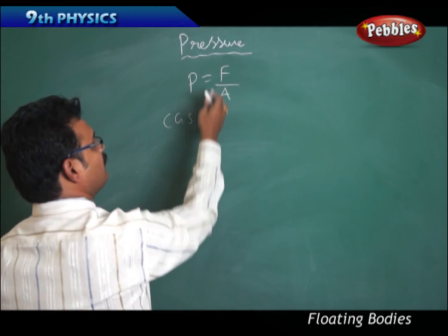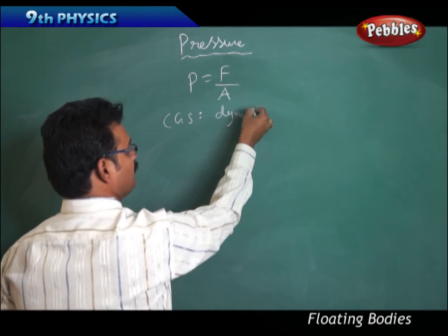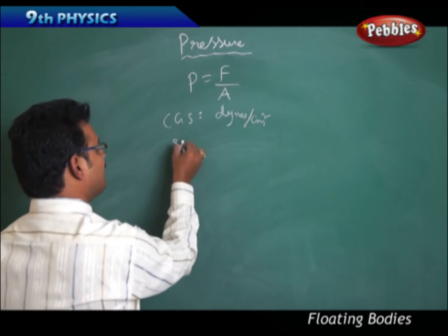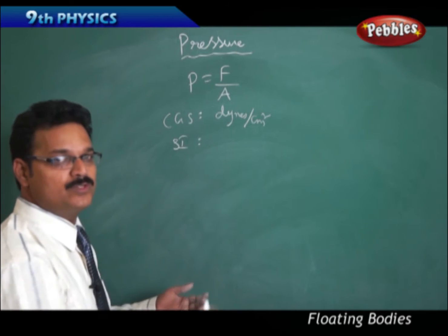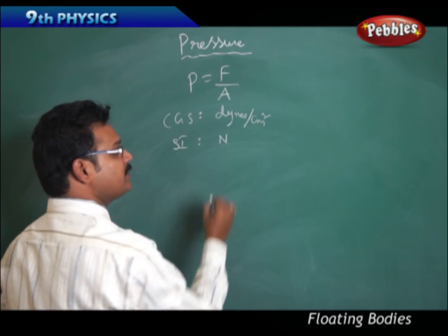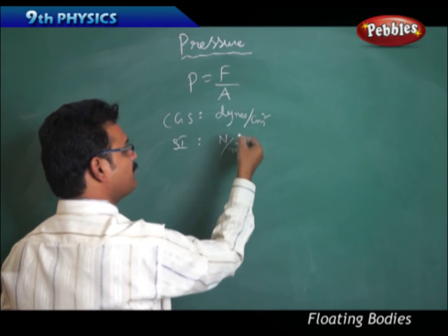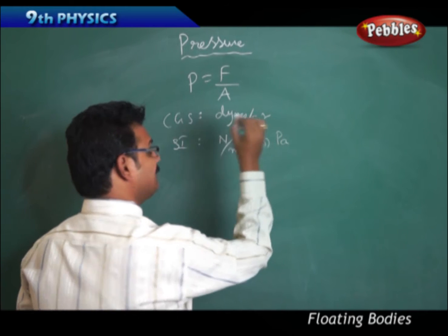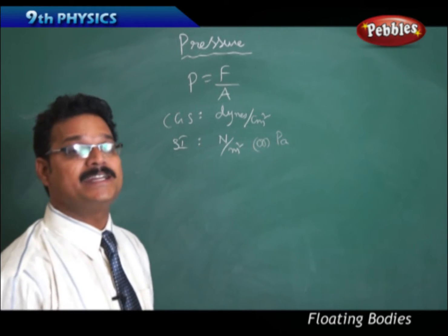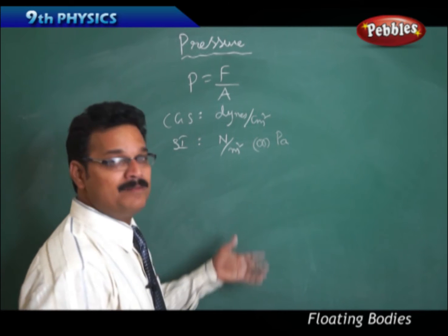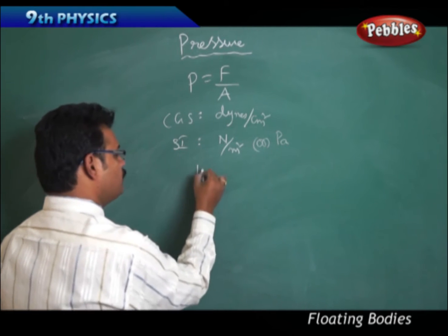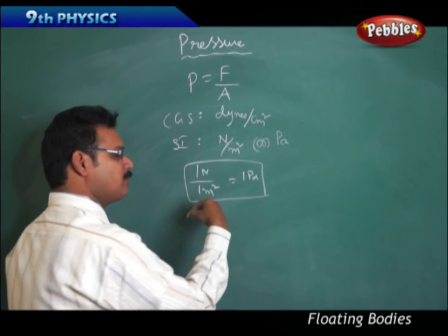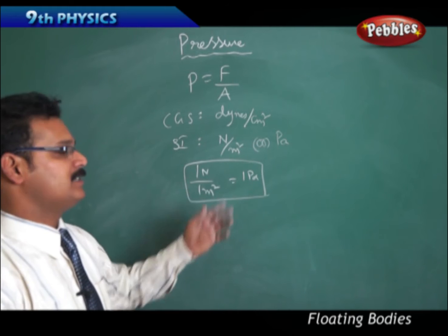Now let us see the units of pressure. In CGS units, force is in dynes and area is in centimeter square, so the unit is dynes per centimeter square. In SI units, which are widely used in physics, force is in Newtons and area is in meter square, so the unit is Newton per meter square. Newton per meter square is also called Pascal, named after the scientist Pascal.